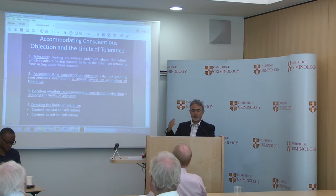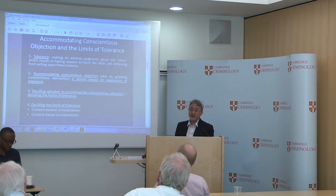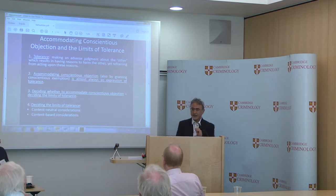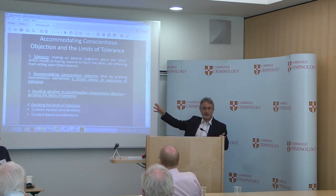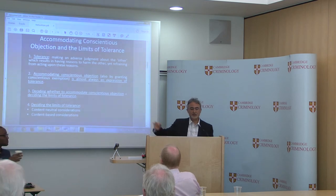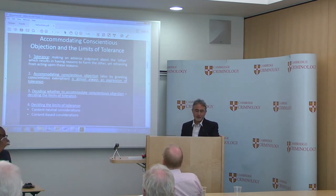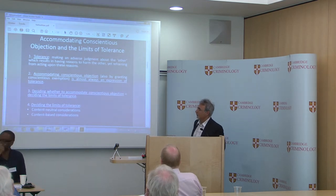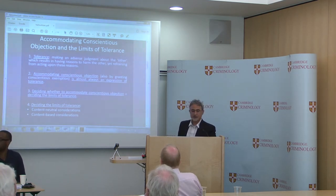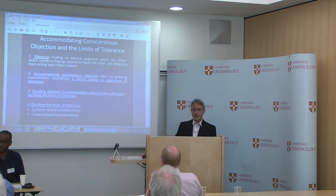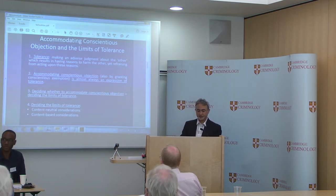The relation between accommodating — in fact tolerating — conscientious objection and the limits of tolerance. I take it, without trying to defend this definition, that tolerance means making an adverse judgment about the other, an adverse judgment that results in having reasons to harm the other, yet refraining from acting upon these reasons. There are other definitions but I'm not going to try to defend my definition here.